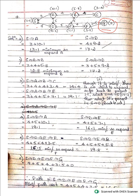From S you can reach A and D. For S→A: path cost 3 + h(A) 10.1 = 13.1. For S→D: path cost 4 + h(D) 9.2 = 13.2. The minimum is S→A with 13.1, so we expand A next.